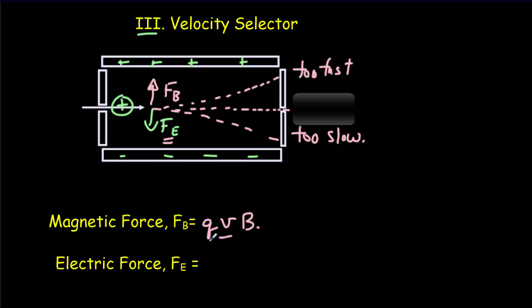The magnetic force given by QVB, the electric force given by Q times E. If I set those equal to each other, QVB equals QE, then I'm going to get the speed that will be given by the ratio of the electric field to the magnetic field. Now, typically what we do is we hold the magnetic field constant and we vary that electric field.